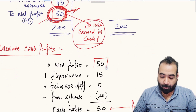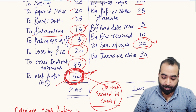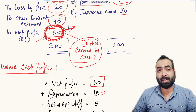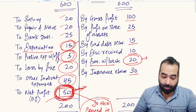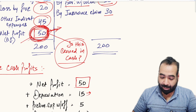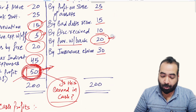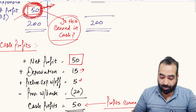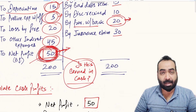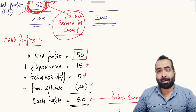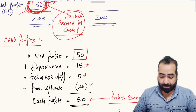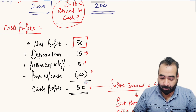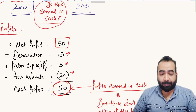So if we want to calculate the cash profit — how much the entity has earned in cash — we must adjust non-cash expenses and non-cash incomes from the net profit. Starting with net profit of rupees 50, we add back depreciation since it doesn't represent any cash outflow, add back the preliminary expenses written off for the same reason, and deduct the rupees 20 provisions written back since it doesn't represent any actual cash inflow — reversing its impact on profits.